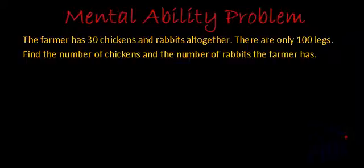Let's first read out our problem. The farmer has 30 chickens and rabbits all together. There are only 100 legs. Find the number of chickens and the number of rabbits the farmer has.